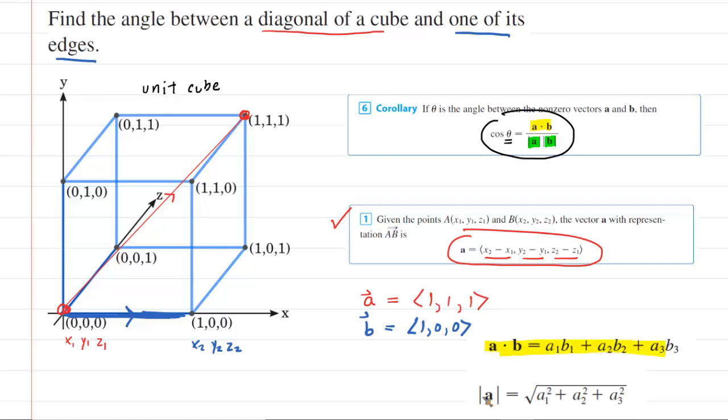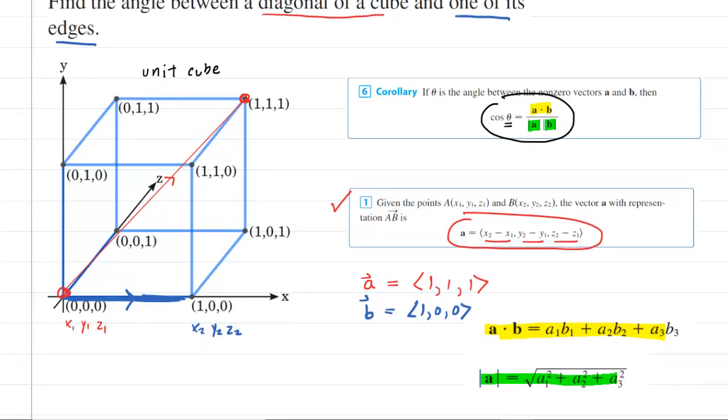Now what we're going to do is find the dot product between vectors a and b. We can do this by simply multiplying the x components of each vector, same thing with the y components, and then also with the z components, and then adding them together.